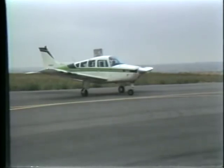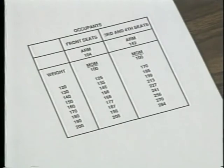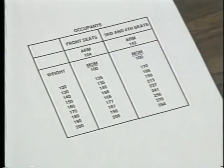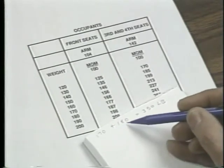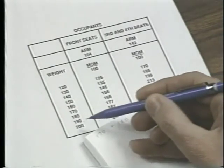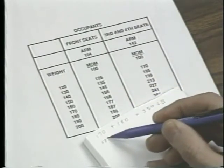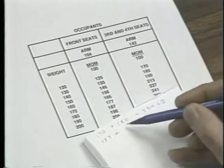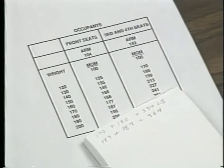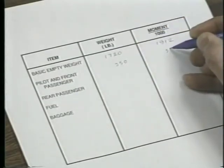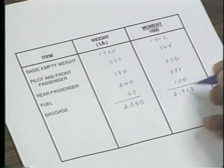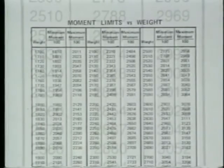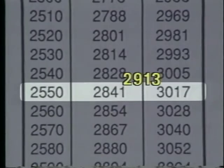Another simplified method of determining moment is the table method. It requires only that you locate a given weight, then find the corresponding moment. Note that the moments in this table must be multiplied by 100 to compensate for the reduction factor. Also, if a single weight exceeds the table limit, you should use two lower weights which, when added together, equal the single weight. For example, since you and the front passenger weigh 350 pounds and the table only goes to 200 pounds, you'll need to find the moment for each separately and then add them together. Once you've finished totaling the weights and moments, use the moment limits versus weight table to verify that the total moment is within the minimum and maximum limits.